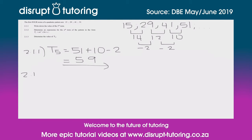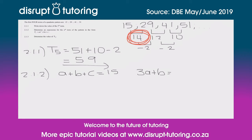Moving on to 2.1.2, they've asked us to determine an expression for the nth term in the form tn = an² + bn + c. We have some useful equations: a + b + c equals the first term of the pattern which is 15; 3a + b equals the first term of the first difference which is 14.